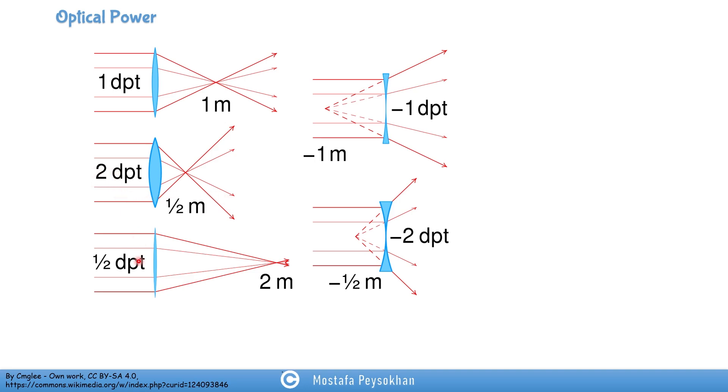This lens is not that strong. The optical power is half a diopter, so it means that the focal length is about two meters. So one over two meters is one half.